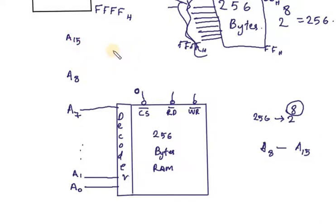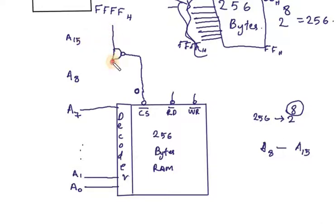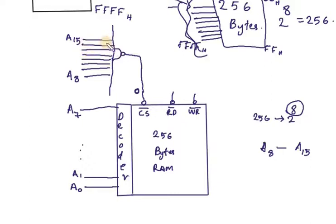Suppose I am connecting these lines to a NAND gate. The NAND gate output is 0. I will mark these lines here: A8, A9, A10, A11, A12, A13, A14, and A15. If the NAND gate output is 0, you know that all these input values should be 1.